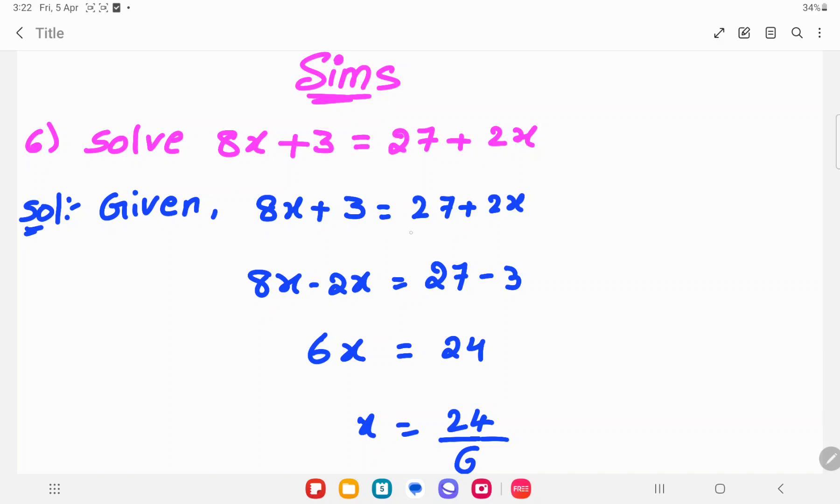Given 8x plus 3 is equal to 27 plus 2x. Here we want variables on one side and constants on one side. So 8x minus 2x on the left hand side equals 27 minus 3.